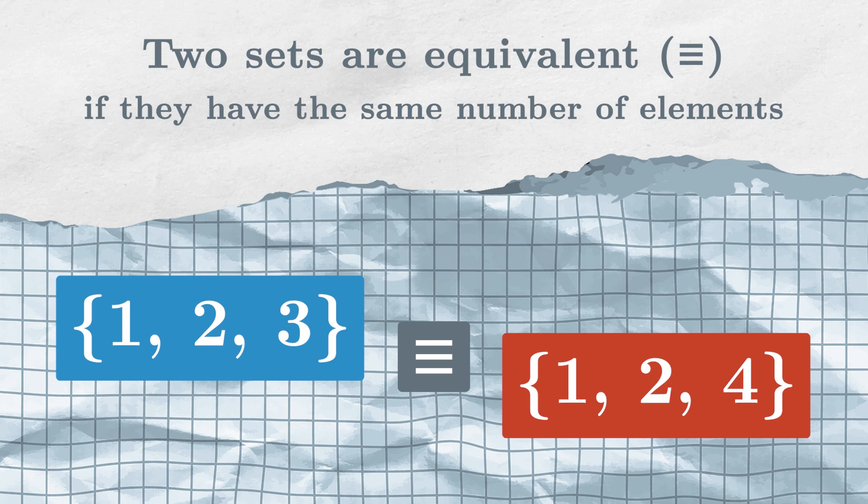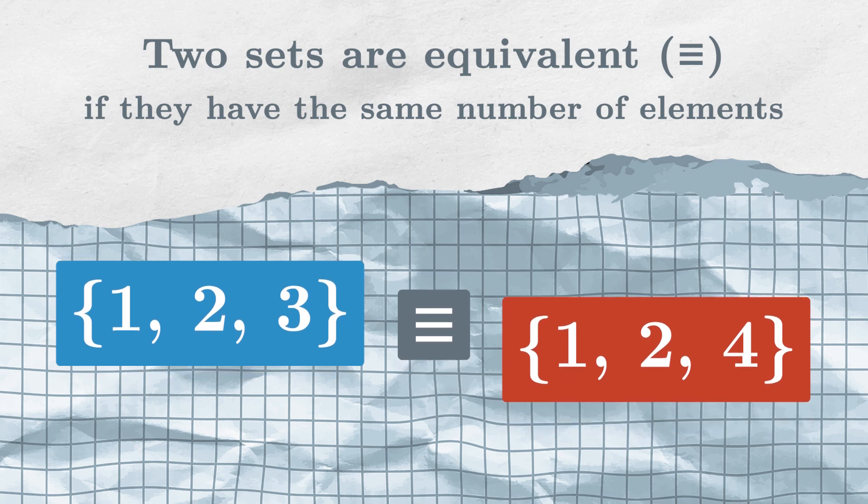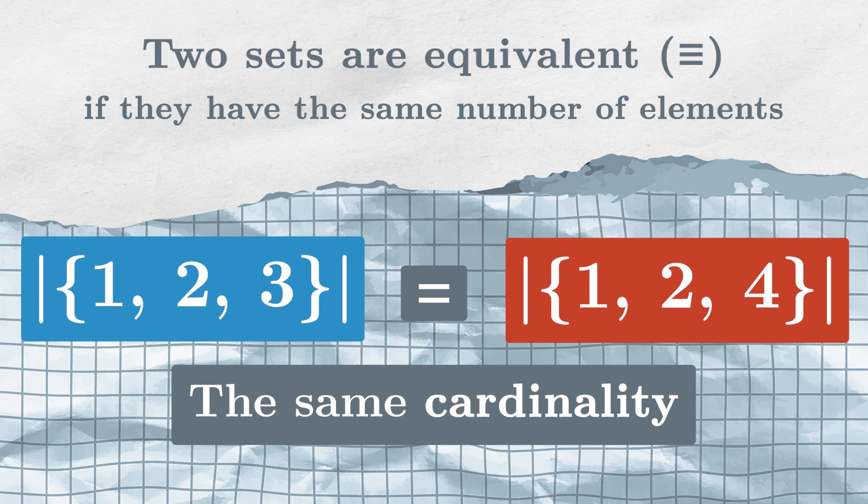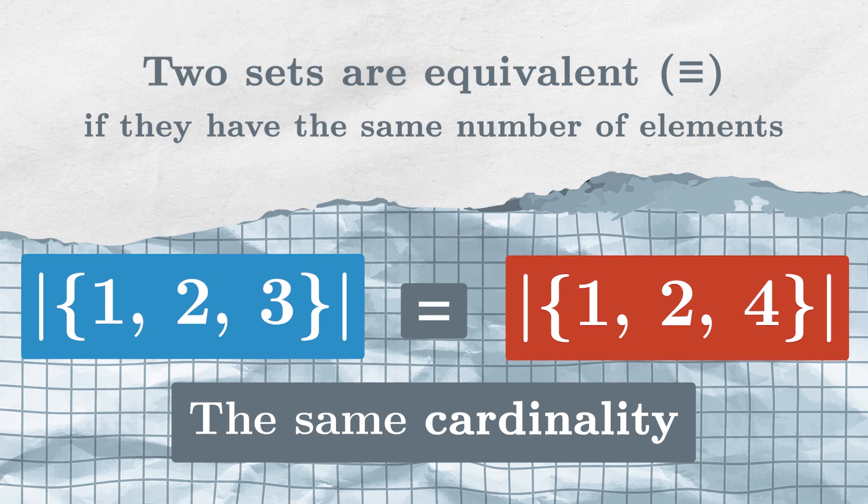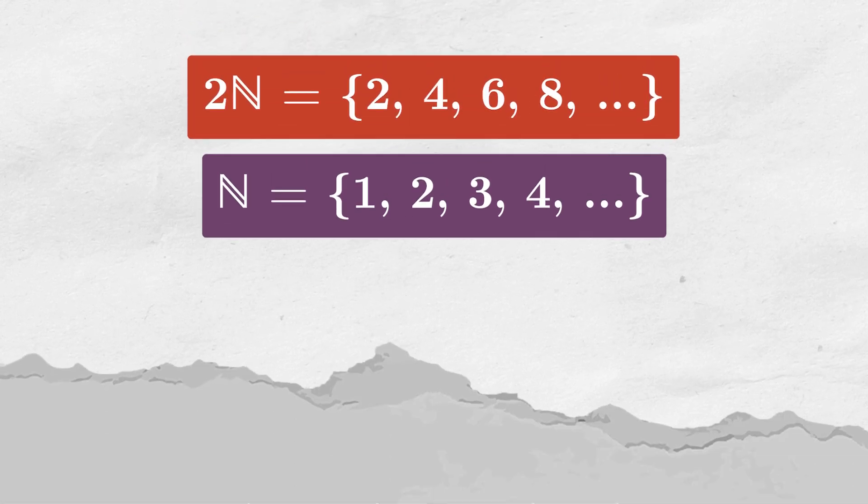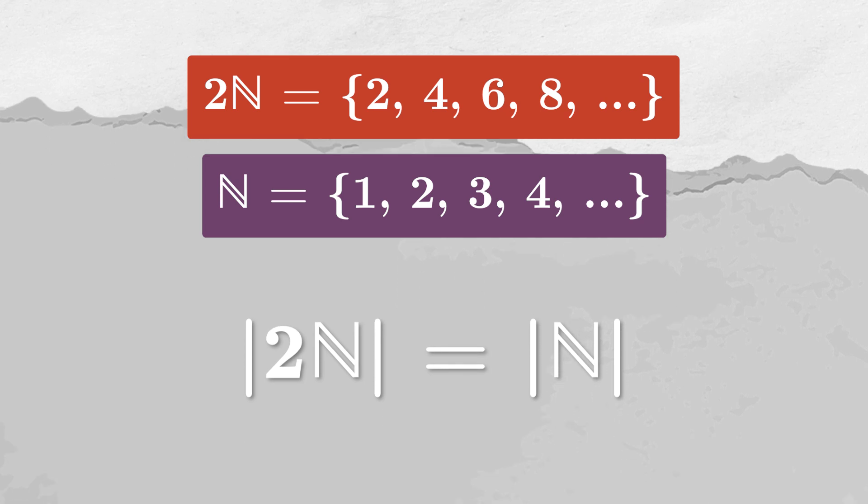In the set theory terminology, we would say that these two sets have the same cardinality, which is denoted like the absolute value. Ah, the thing from the beginning of the video. Yes, the set of even numbers is equivalent to the set of all natural numbers. Which means that there are as many even numbers as all numbers. Weird, right?